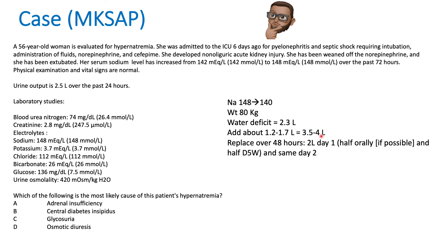Give the first 2 liters on day one — she's intubated, so she can't drink orally, but she should have an NG tube. Give about 1 liter through the NG tube and 1 liter as IV D5W, or both liters IV. The other 2 liters go over the next 48 hours the same way. Since she's hemodynamically stable, you don't want to give saline or isotonic fluid at this point.